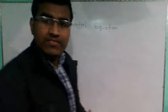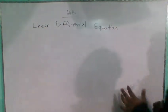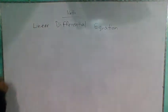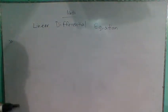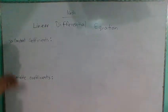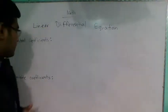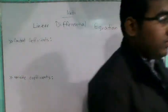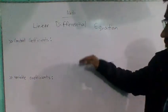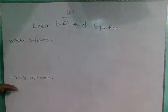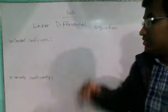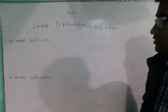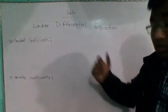This is the linear differential equation. The linear differential equation has two parts: constant coefficient and variable coefficient. Step by step, we have constant coefficient and variable coefficient. Linear differential equation with constant coefficient.